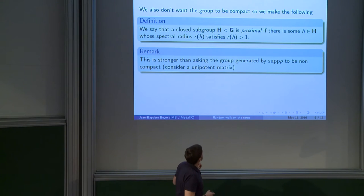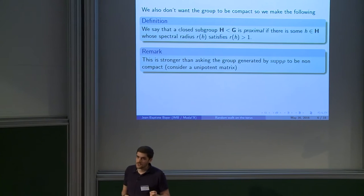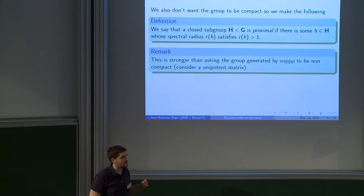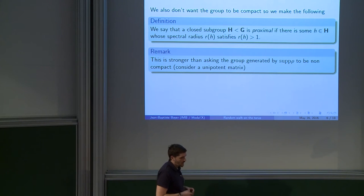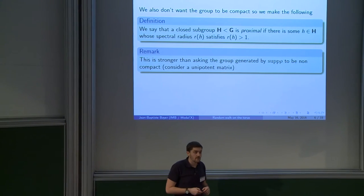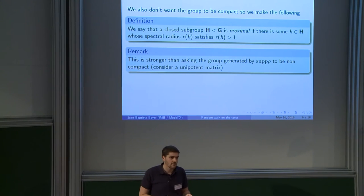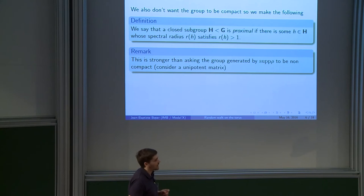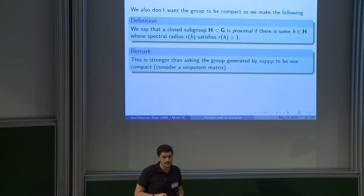My second assumption is a non-compacity one. But actually, just asking the subgroup to be non-compact is not enough. So what I will ask is this proximal assumption. And I say that a subgroup of SL₂(R) is proximal if it has an element with an eigenvalue that is bigger than 1. Actually, that is smaller also because my matrices are in SL₂. So the product of the eigenvalues is equal to 1.